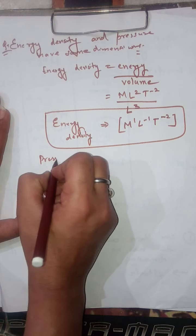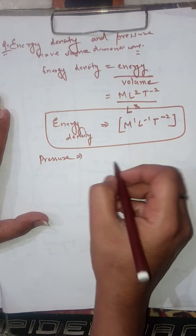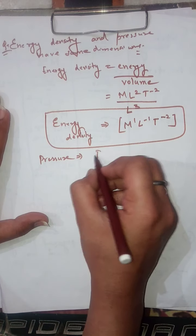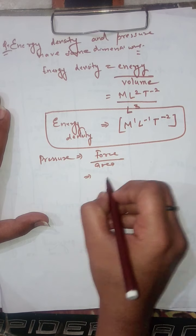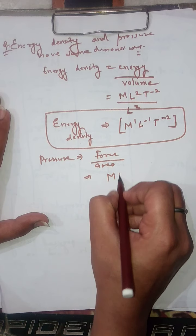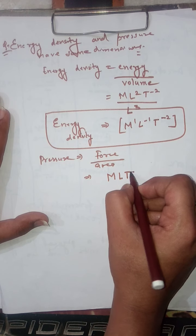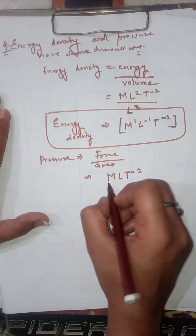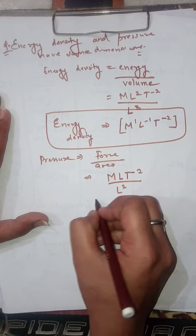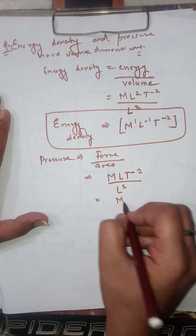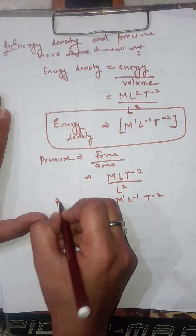Now what is the unit of pressure? Pressure is force per unit area. The dimensional formula of force is M L T⁻², and dividing by area L², we get M L⁻¹ T⁻².